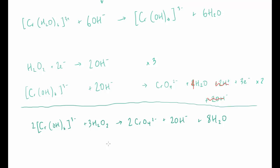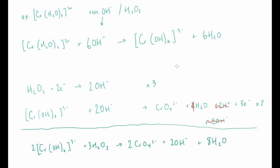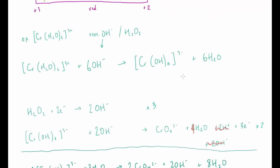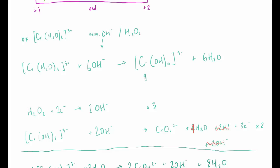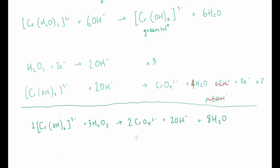Looking at the colours again: [Cr(OH)₆]³⁻ is a green solution, and the CrO₄²⁻ we form is a yellow solution (the chromate ion). From this yellow chromate, by adding H⁺ we would go to the dichromate ion Cr₂O₇²⁻, taking us right back to where we were at the beginning. So we can keep going round again.